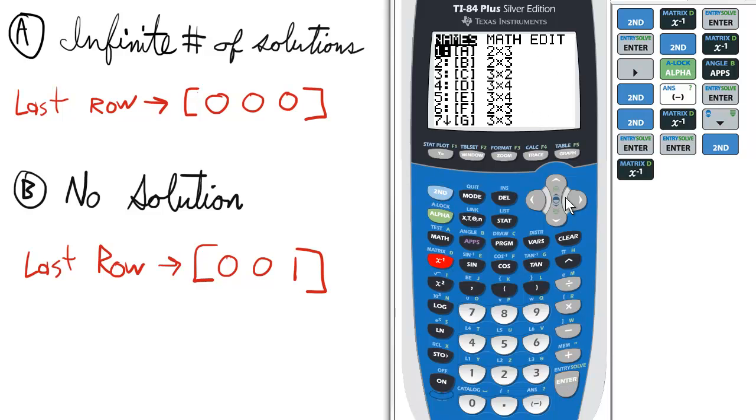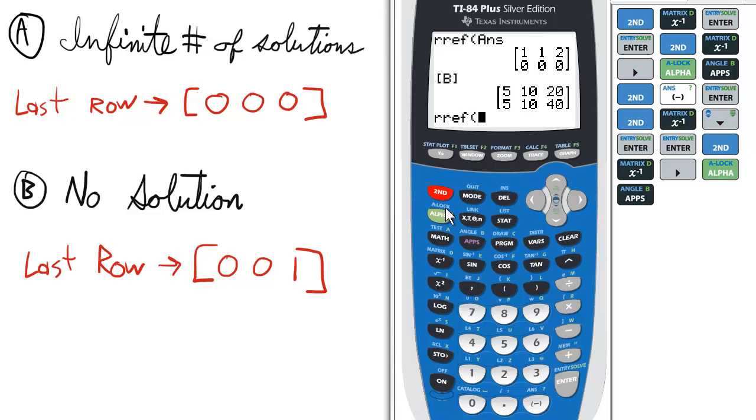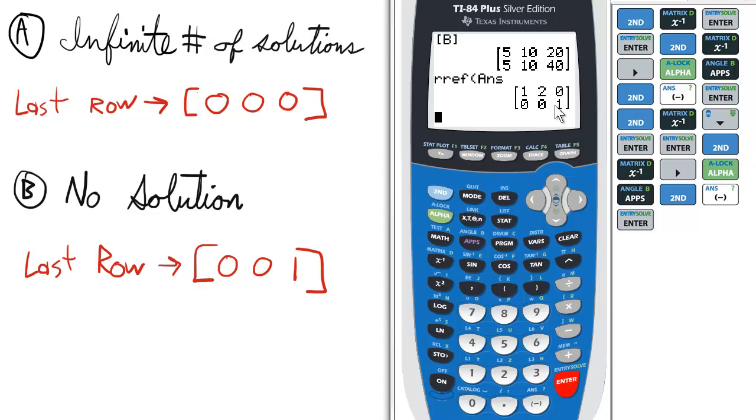Going to matrix, math, choosing RREF, and matrix B. Notice the last row is 0, 0, 1.